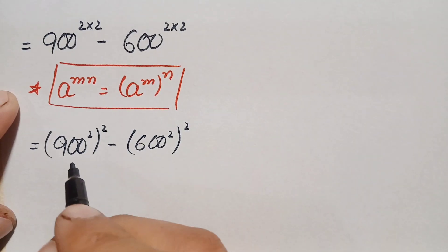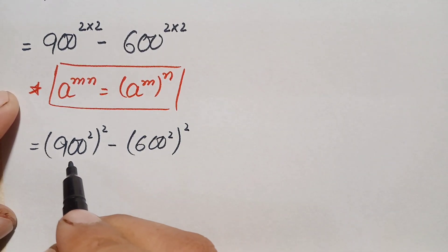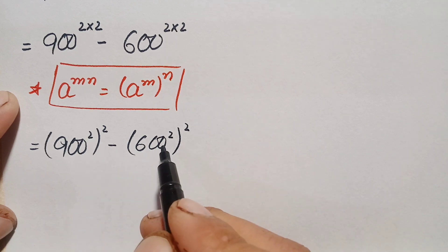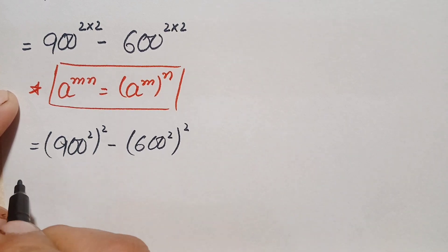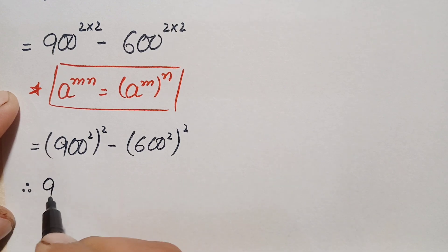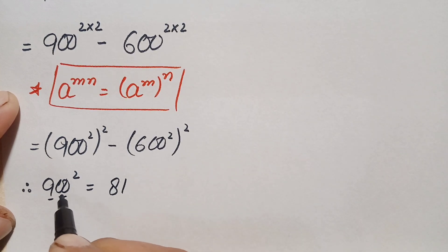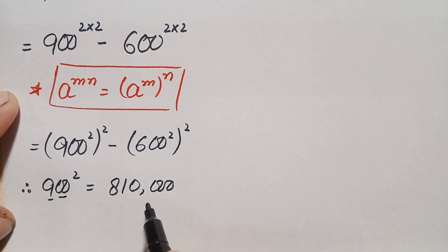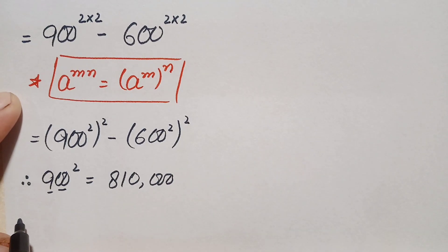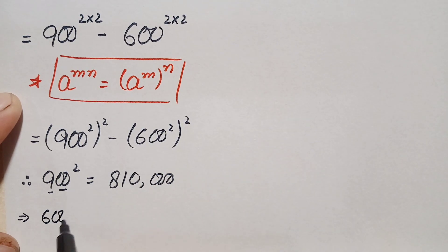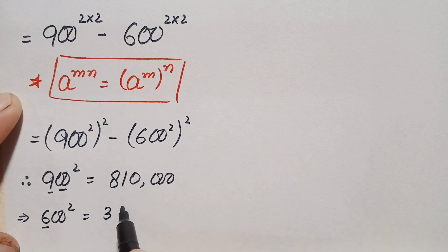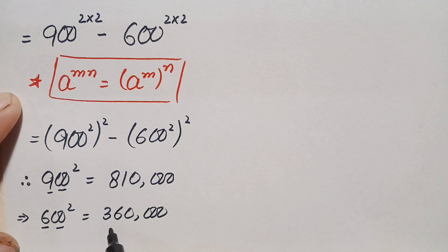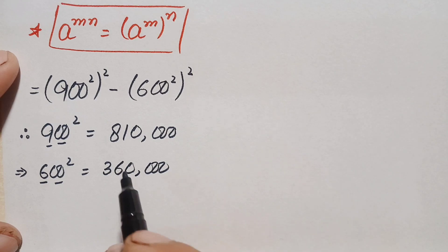Now we will find the value of the two numbers inside the parentheses: 900 squared and 600 squared. For 900 squared: 9 squared is 81, and since there are two zeros, doubling gives four zeros, so 900 squared equals 810,000. For 600 squared: 6 squared is 36, doubled gives four zeros, so 600 squared equals 360,000.